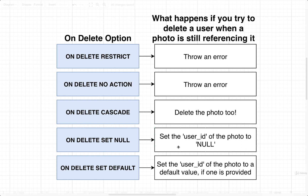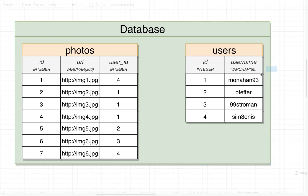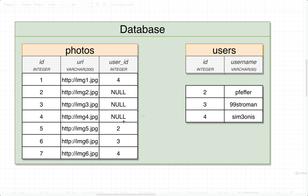Another option is SET NULL. If we delete a user, we find all the photos associated with that user and set the user ID of them to null. In that scenario, we delete the user with ID 1, and those photo rows would have their user_id set to null, null, and null. These photos will still exist, but there is a clear sign that there is no user associated with them.